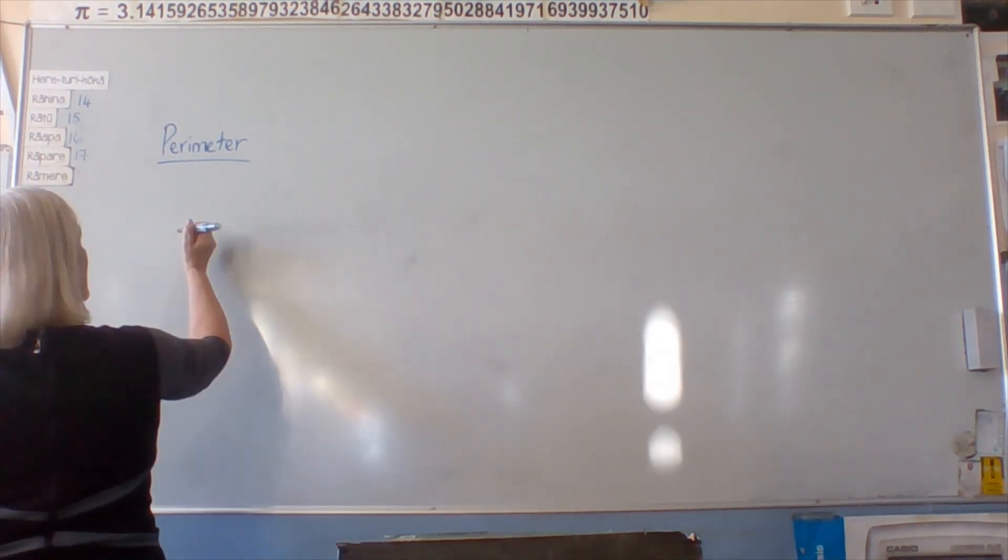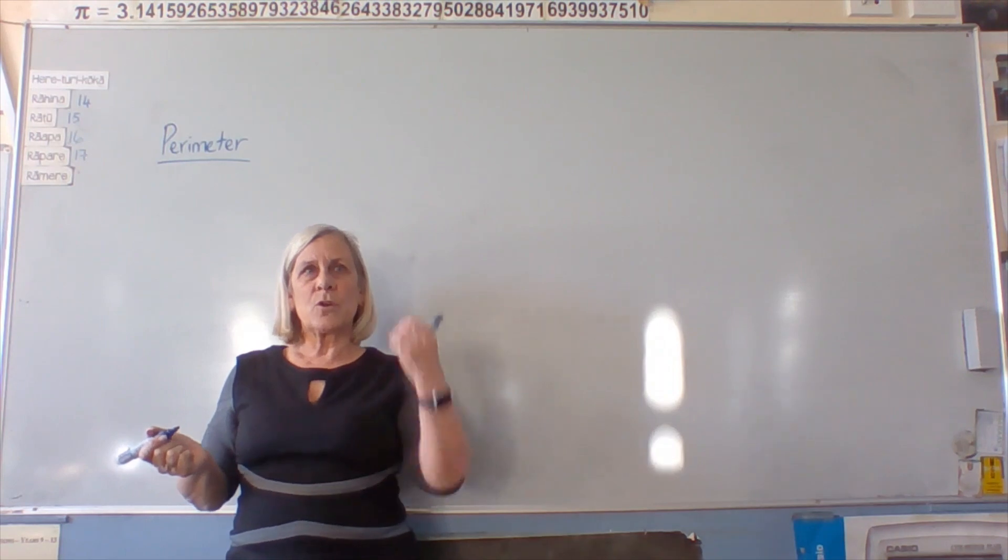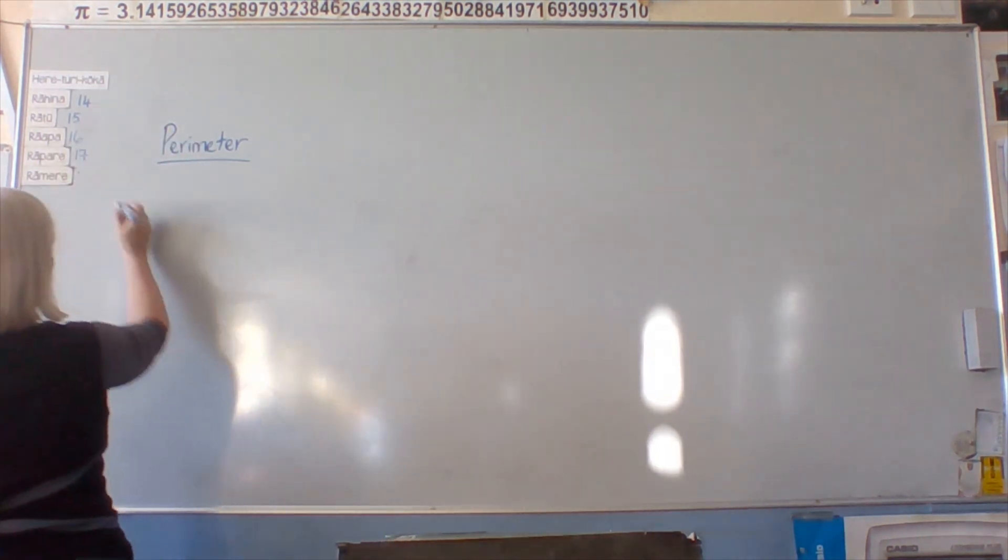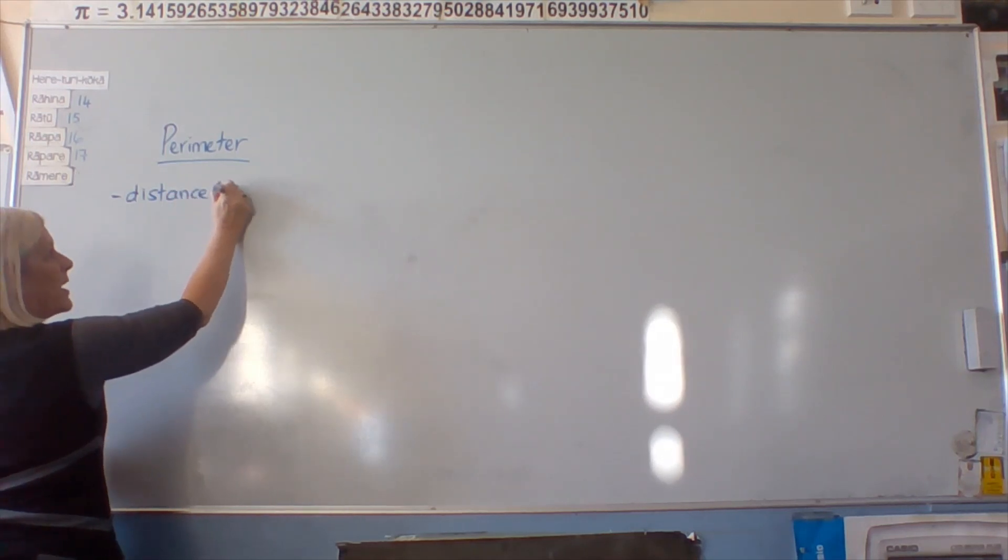So you might have had something like, what is the perimeter? Good. The distance around the edge. So the distance around a shape.